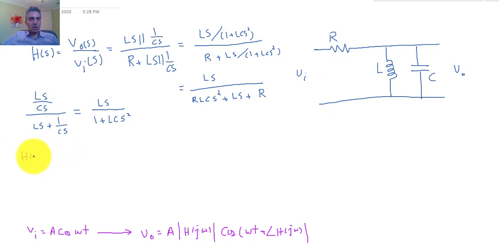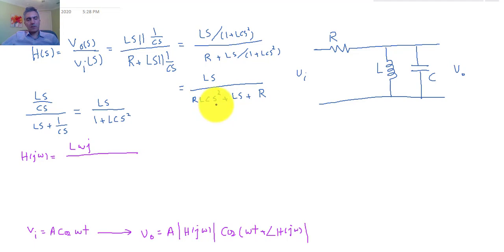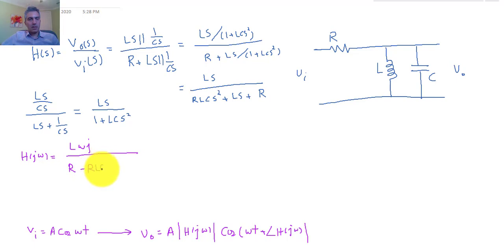Now H(jω) is equal to LωJ in the numerator. Substituting jω, the (jω)² term becomes ω²·j² which is −ω², so the denominator becomes R − RLCω² + LωJ. That gives us the full expression for H(jω).